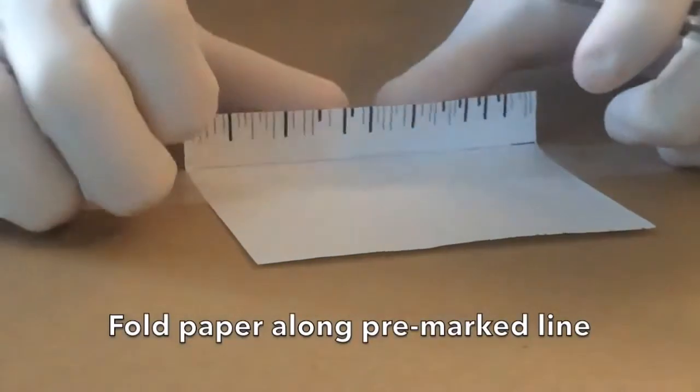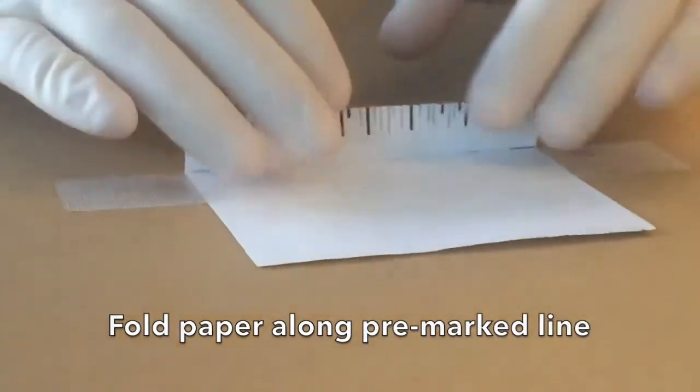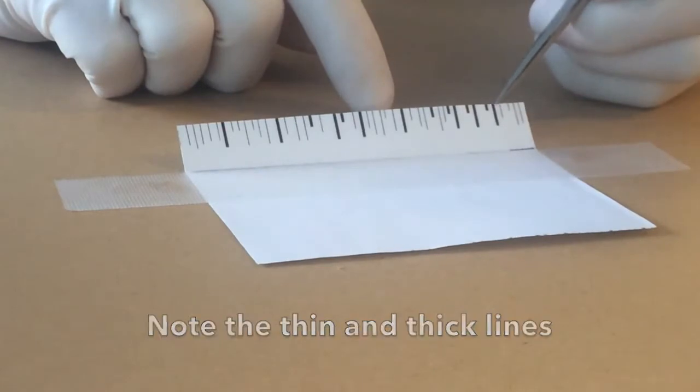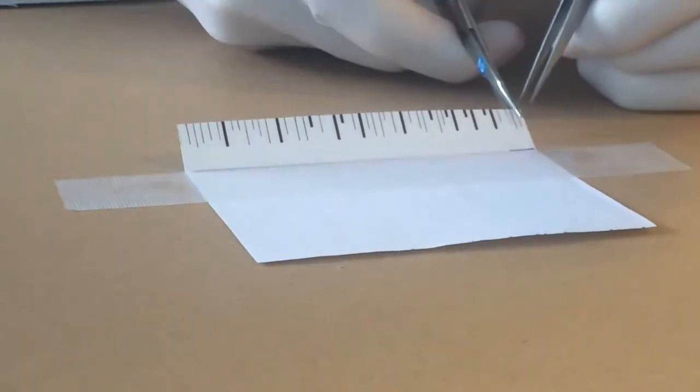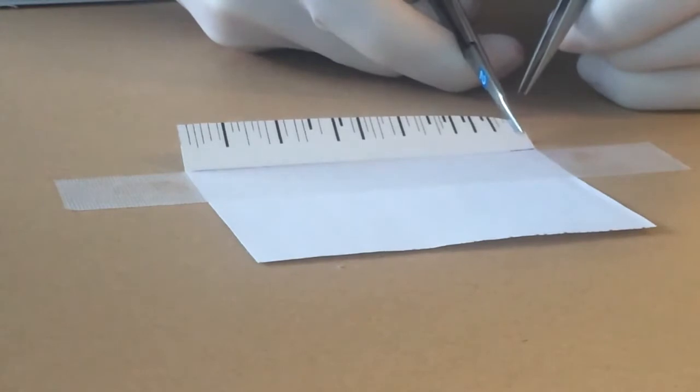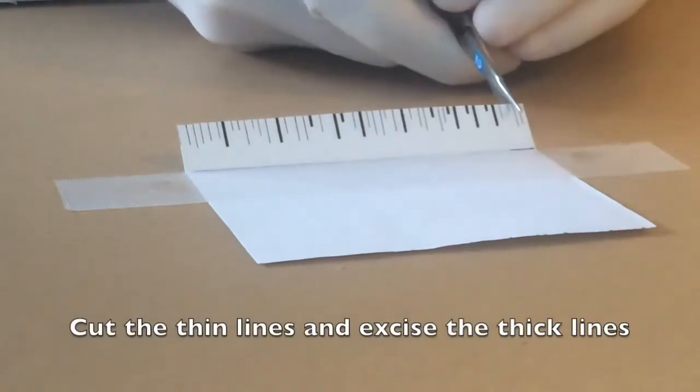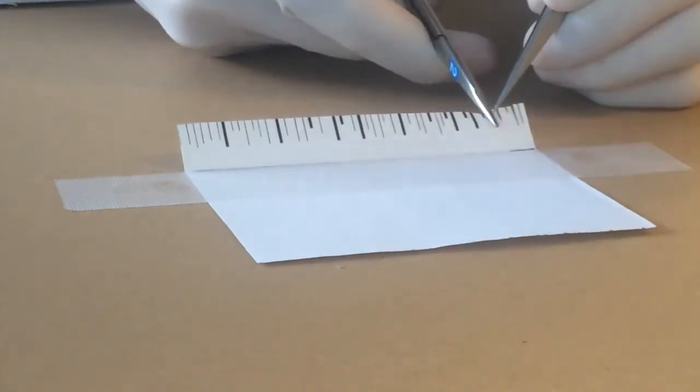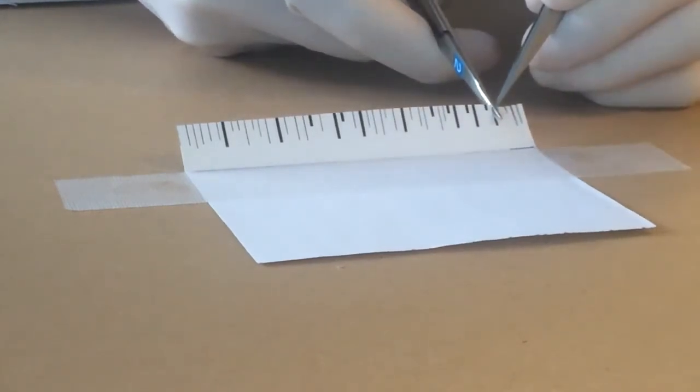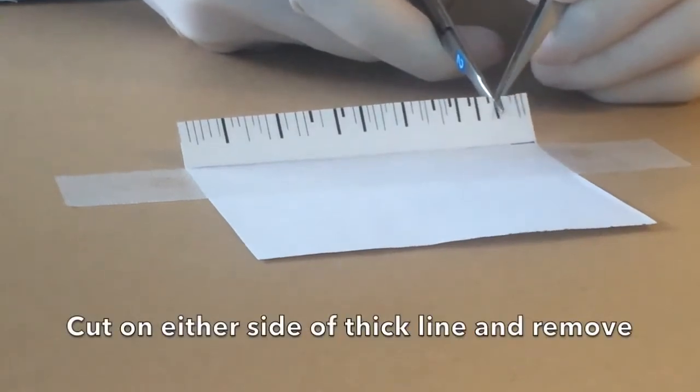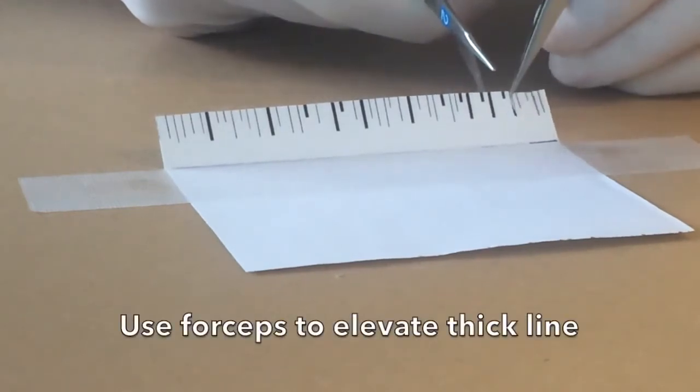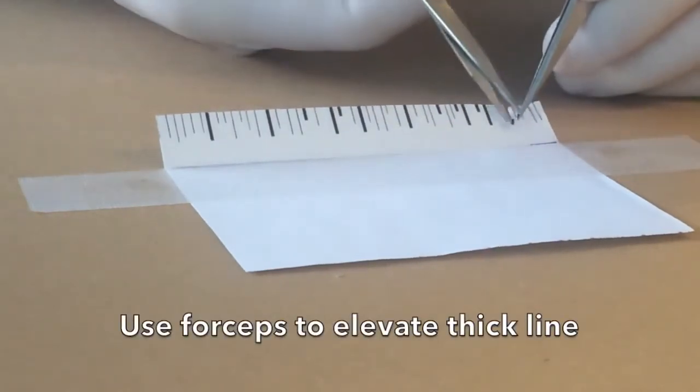The fourth exercise is scissor cut with removal. Again, fold the paper along the pre-marked line. In this model note the thin and thick lines. As in model 3, cut the thin lines with the micro scissors. In this model, excise the thick lines. Cut on either side of the thick line and remove. Use the forceps to help elevate the thick line.